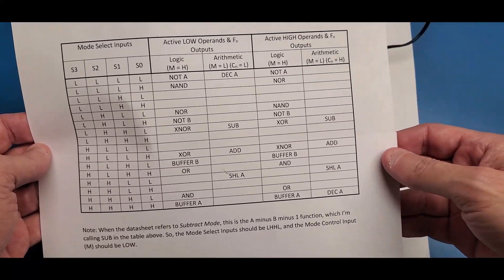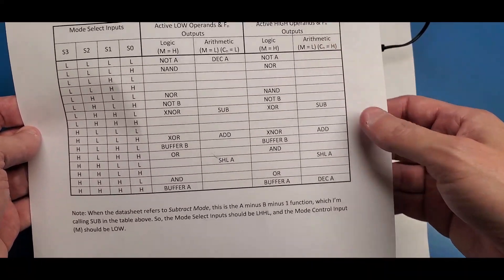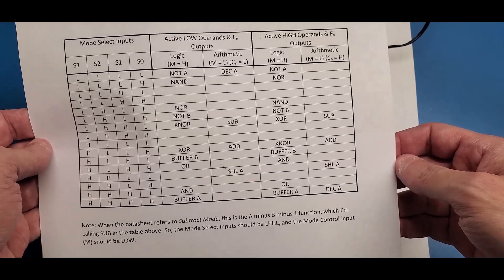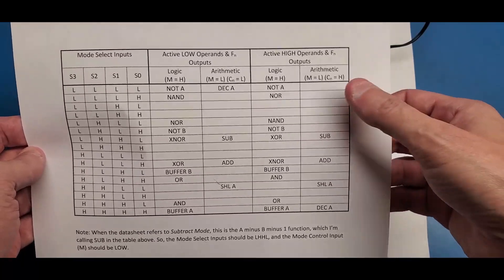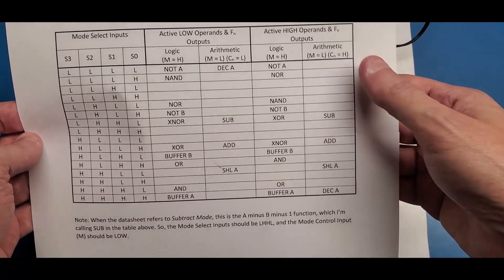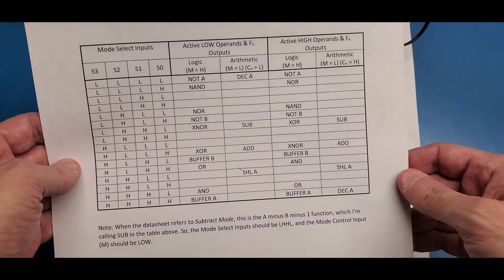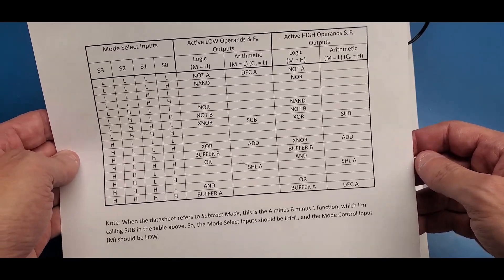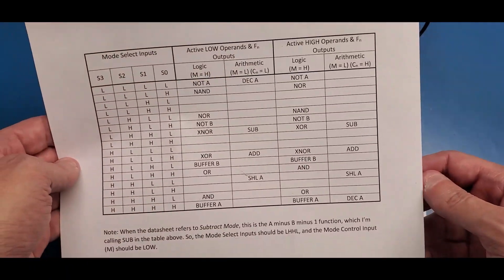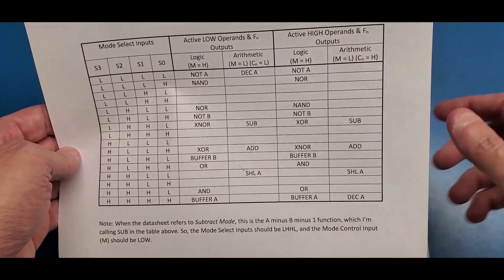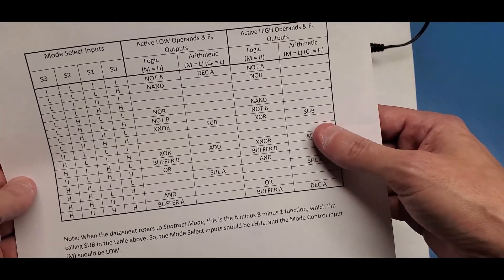I think these would be the useful logical functions, and over here these would be the useful arithmetic functions. Anywhere there's a blank it's either because the function has been duplicated somewhere else — like the OR function appearing twice — so I just left it out. And any time there was a function I thought was useless I took it out. In the previous video I showed how a lot of these functions work on the ALU, so you can go back and view that. What I want to talk about today is the subtract function.